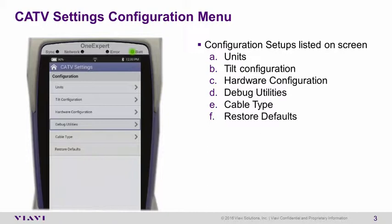The configurations listed under CATV settings are: Units, Tilt Configuration, Hardware Configuration, Debug Utilities, Cable Type, and Restore Defaults.